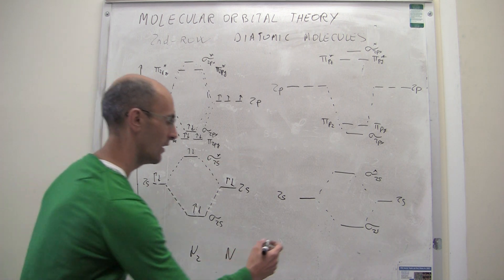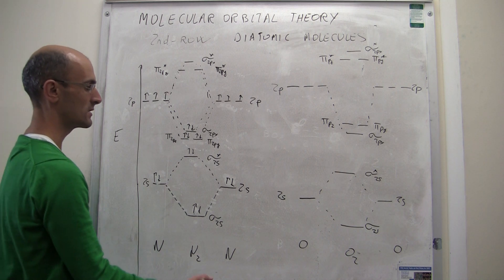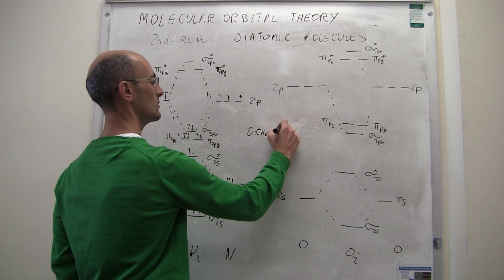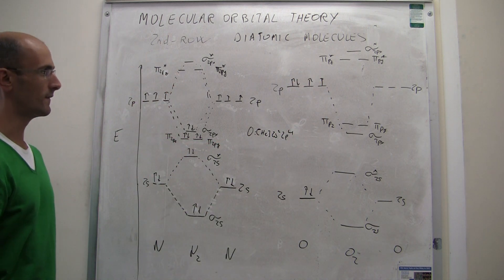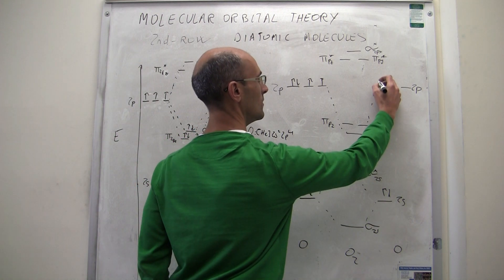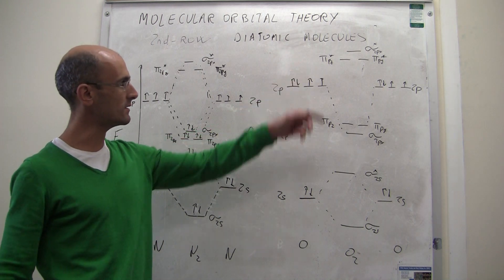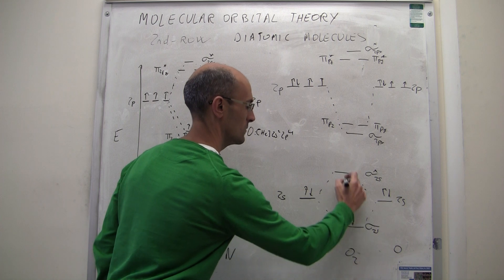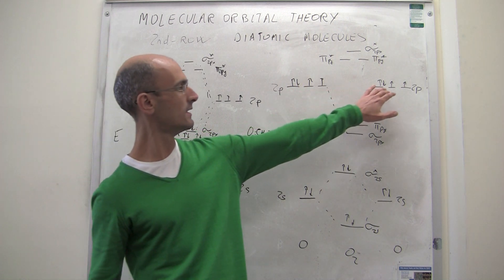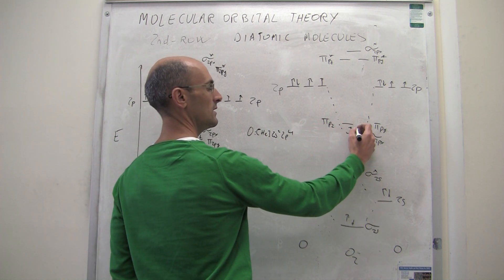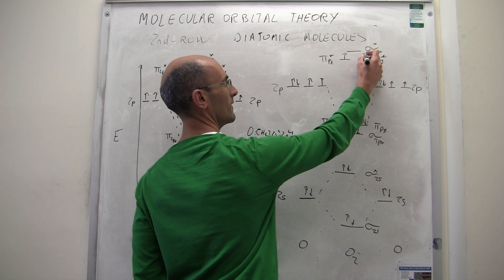Let's figure out the molecular orbital diagram for O₂. Oxygen's configuration is helium, then 2s2, 2p4. Each oxygen atom has 4 electrons in the valence shell, giving us 8 total electrons to put into the molecular orbitals from the two atoms combined. Filling in order: first, second, third, fourth, fifth, sixth, seventh, and eighth electron placed. That is how the molecular orbital diagram for O₂ looks.